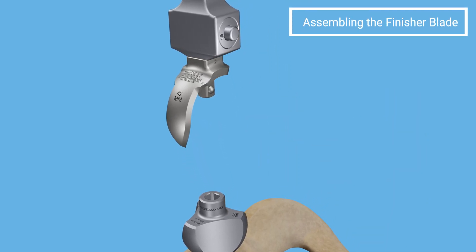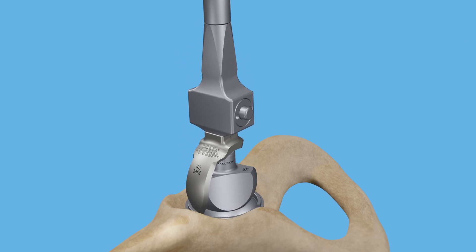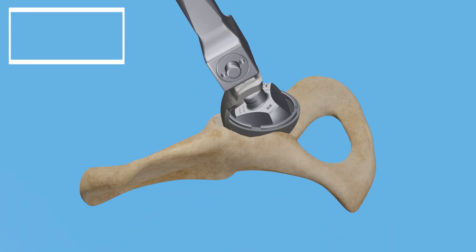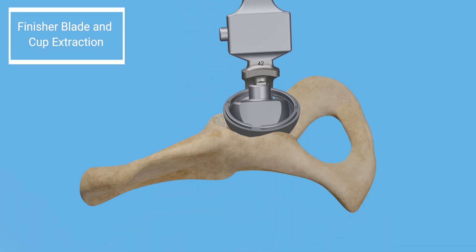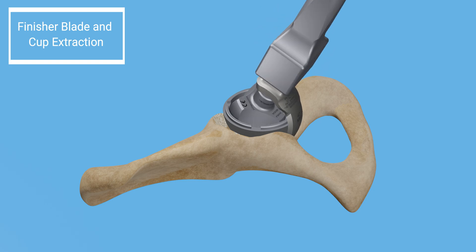To complete the cup removal, assemble the finisher blade with the centering device. Perform a second round of plunge cuts utilizing the finisher blade to complete cup extraction.